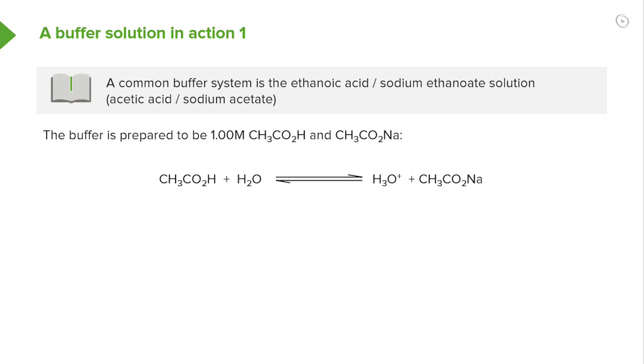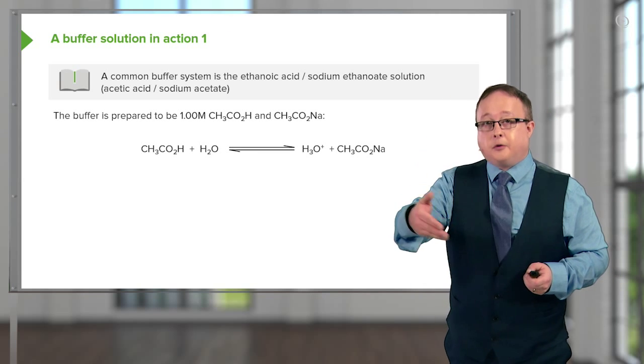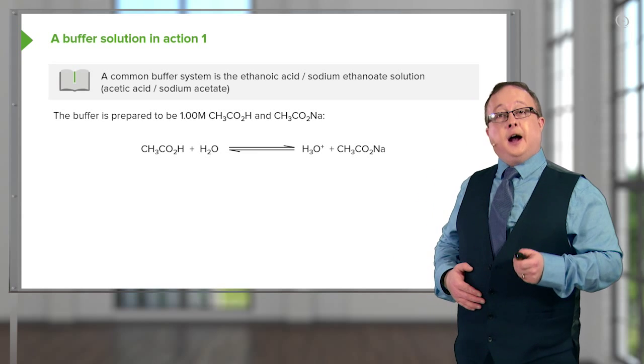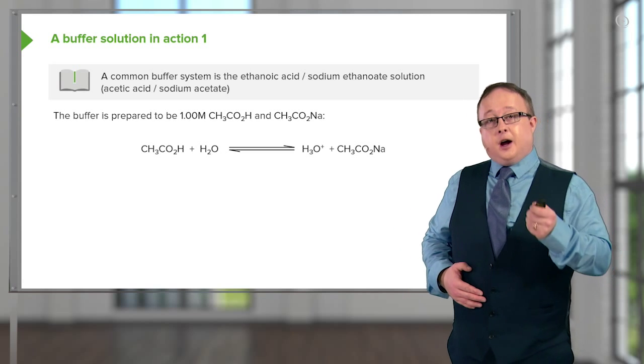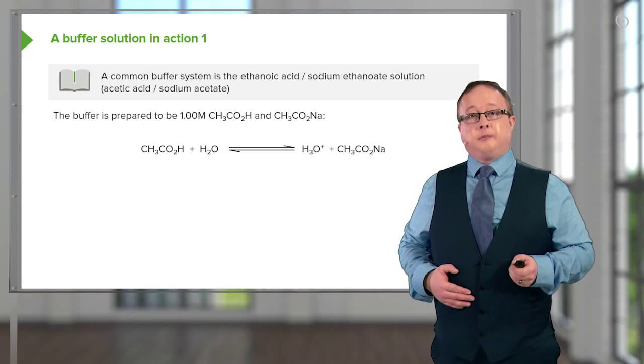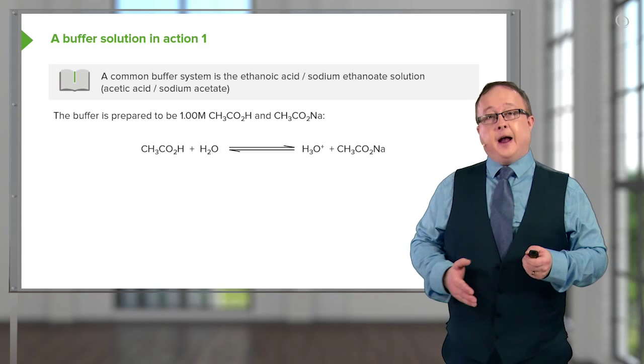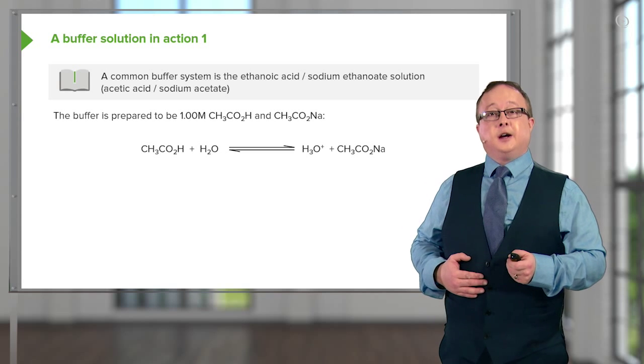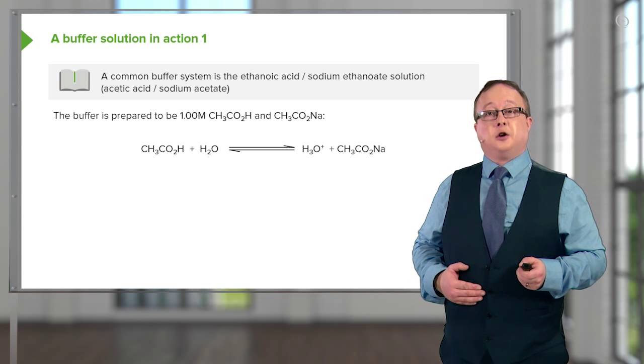The buffer is prepared in this particular case as 1.0 molar or moles per liter acetic acid or ethanoic acid and sodium acetate or sodium ethanoate. The equilibrium that I showed you before in structural form is shown here where we have the ethanoic acid plus an equivalent of water giving us the hydronium ion and CH3CO2Na.